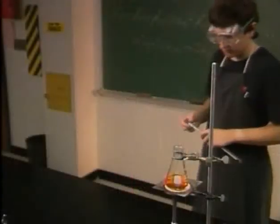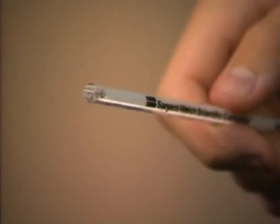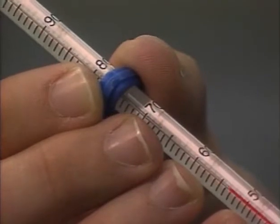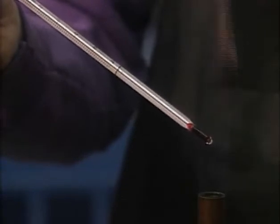Thermometers are one of the most important tools in the chemistry laboratory. They're easy to use, but since they're usually made of glass they have to be handled properly. One common misconception is that lab thermometers have to be shaken down like medical thermometers — shaking is totally unnecessary and it can be dangerous. The liquid inside can move freely up and down on its own without shaking.